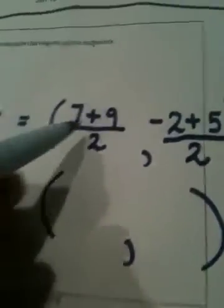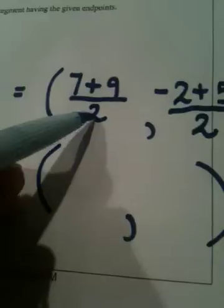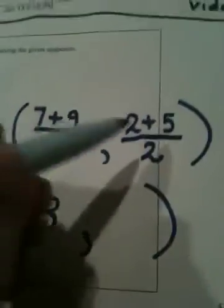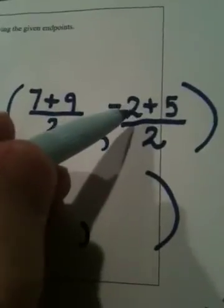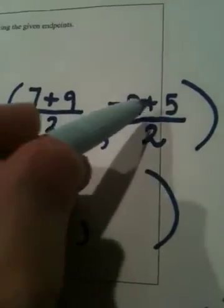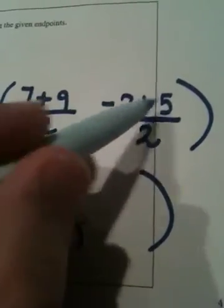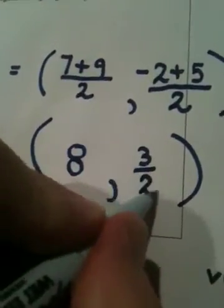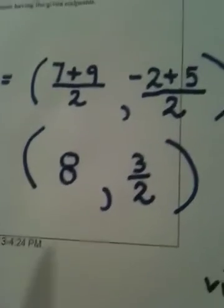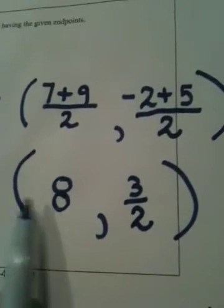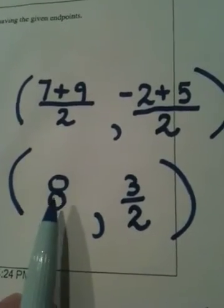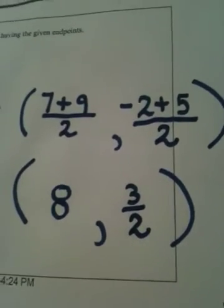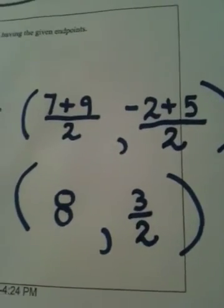Sixteen divided by two is eight. And negative two plus five is three. Three divided by two is three halves, or 1.5. So the correct answer is the ordered pair eight comma three halves, or eight comma 1.5.